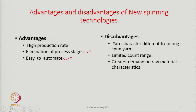We will see why, if the yarn characters are different, why it will be a disadvantage. This will come to be known as we go through the course. The second point is limited count range — that is the count that we can spin on any of these systems is very, very limited. Ring spinning is the most flexible spinning technology from the point of view of range of counts of yarn that we can produce, from very coarse to very fine.